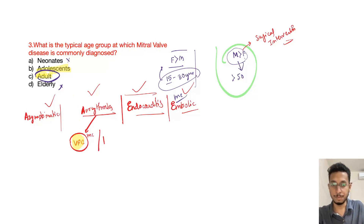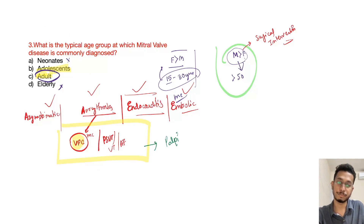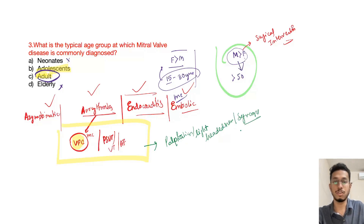Apart from ventricular premature complexes, we can also see PSVT, VT, and atrial fibrillation. If arrhythmia develops, the patient will come to you with palpitations, lightheadedness, and syncopal-like presentation.